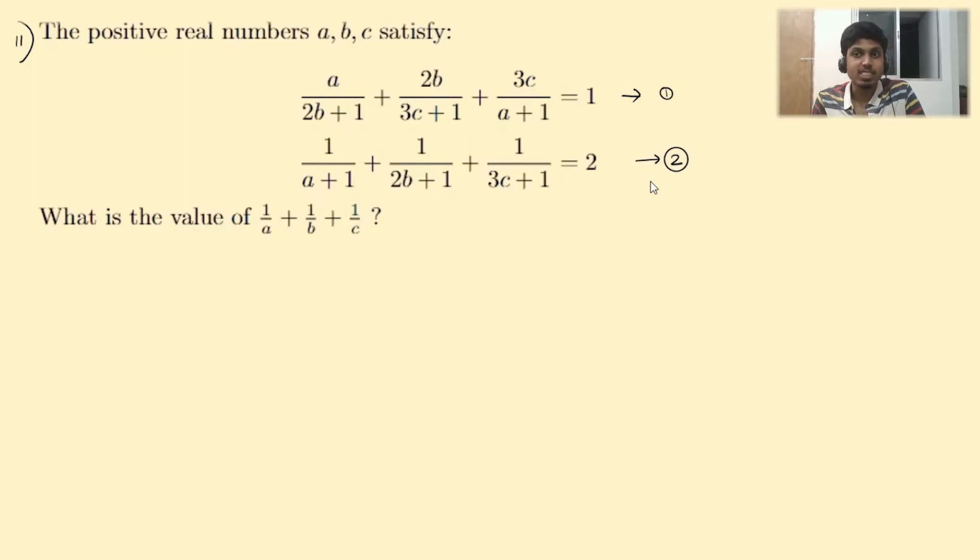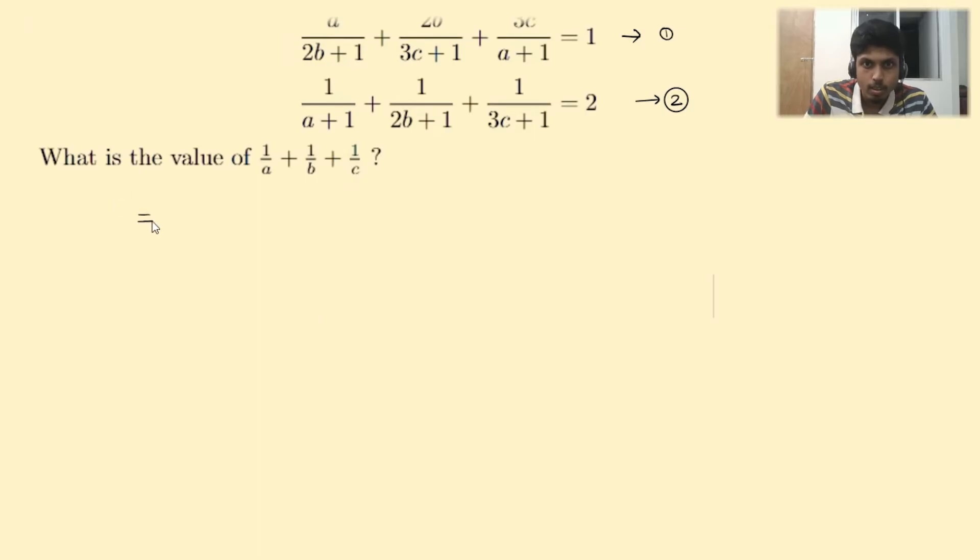Coincidentally, the RHS matches with my numbering. Anyways, adding up these two would yield (A+1)/(2B+1) plus (2B+1)/(3C+1) plus (3C+1)/(A+1) equals 3. Note that these have common denominators so I can add them directly in the numerator.